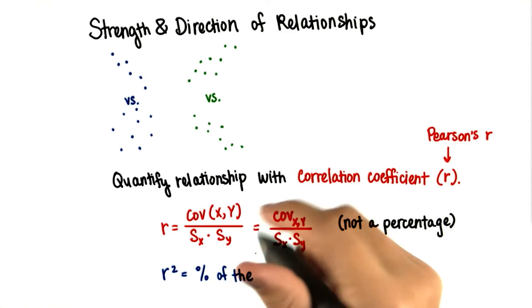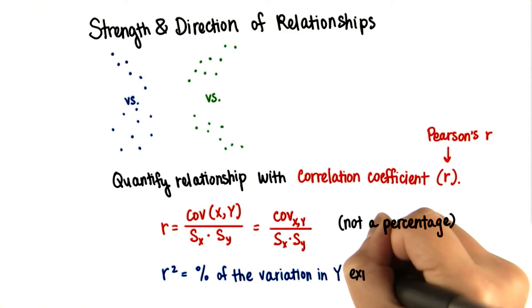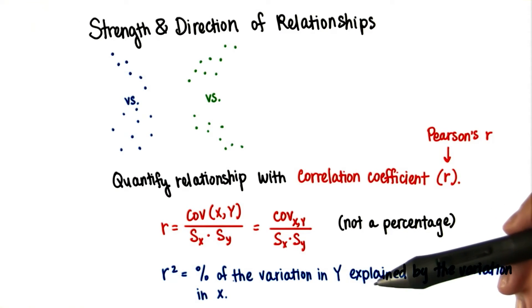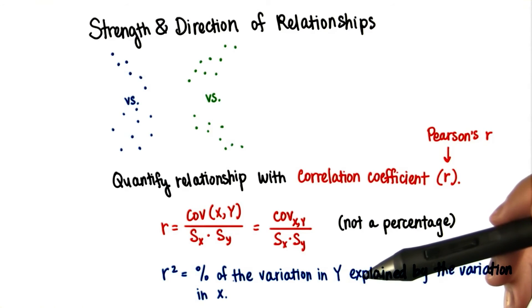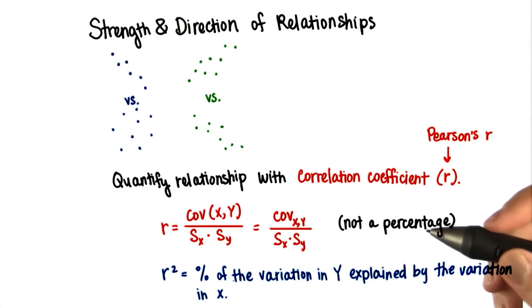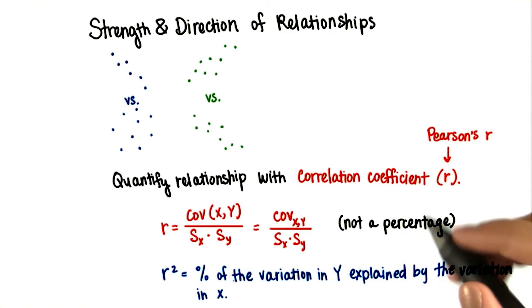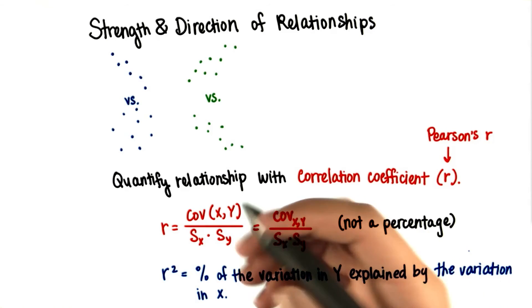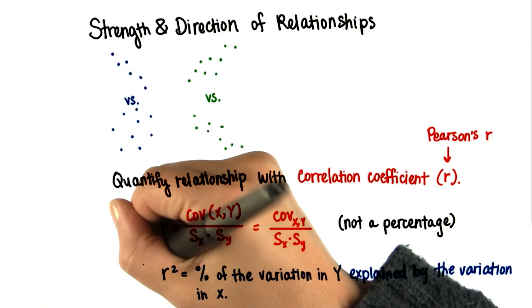However, r squared is the percentage of the variation in y explained by the variation in x. You saw this before when we did t-tests, and you saw how we explained a certain percentage of the difference between sample means, or between a sample mean and the population mean, that's due to the different treatments. R squared here has the same interpretation. R squared is called the coefficient of determination.